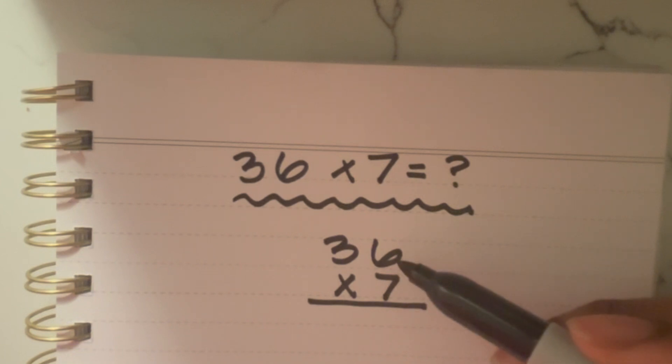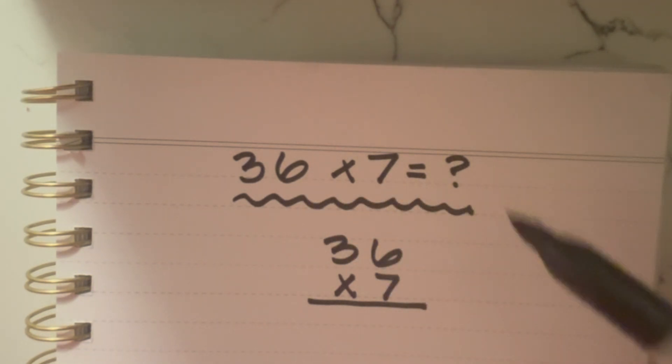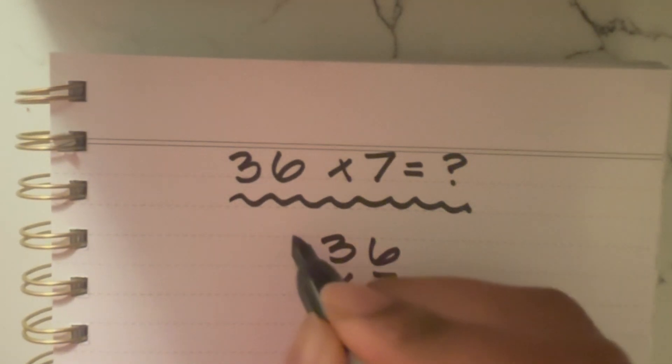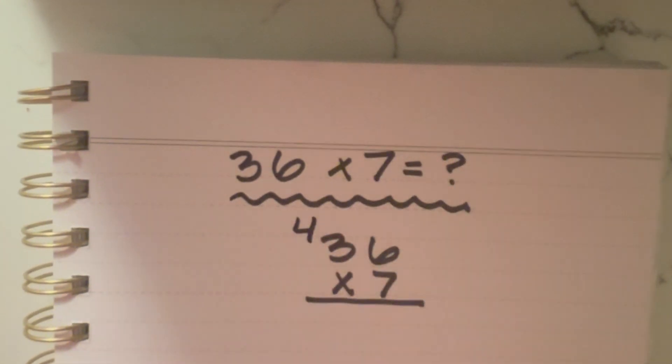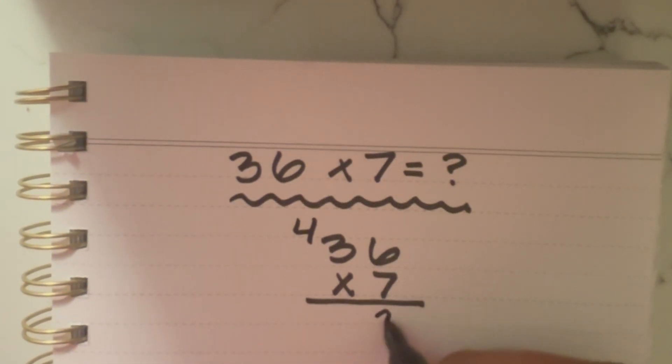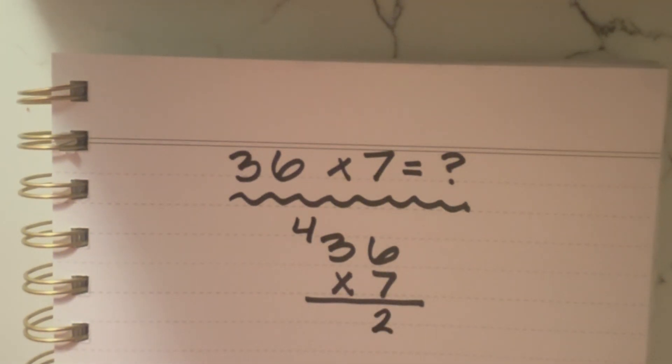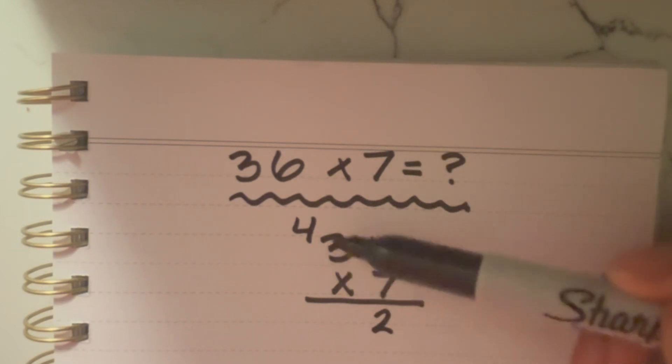7 times 6 is a lot easier than calculating 36 times 7 all at once. We know that 7 times 6 is 42. We're going to write it like this, where we have our 4. We put our 2 up here. So we have 42. Now that we're done with this side, we're going to look at this side with the 3 and the 4.